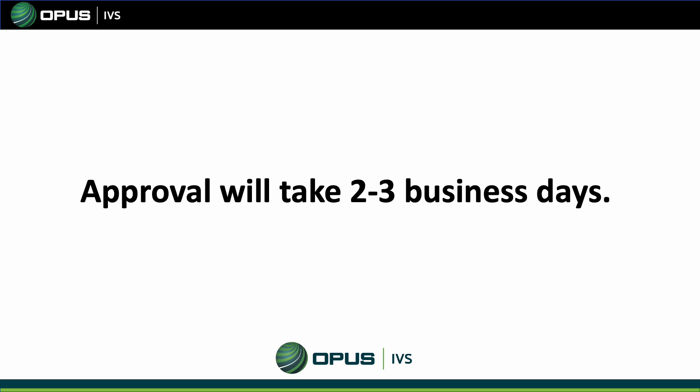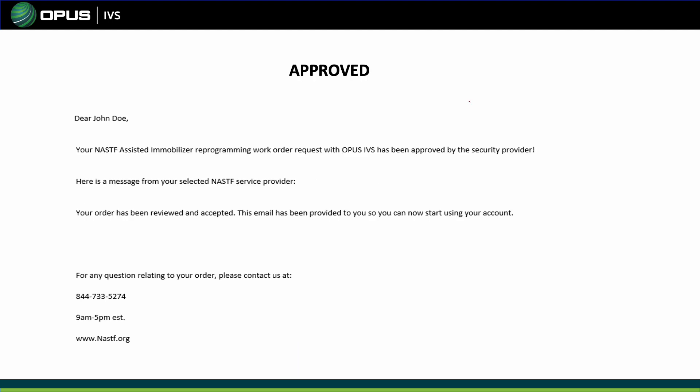NASTIF will take about two to three business days for approval, though sometimes it can be sooner. Once you get approved, they will send you an email with your approval. If you get denied, you will also receive an email with your denial.